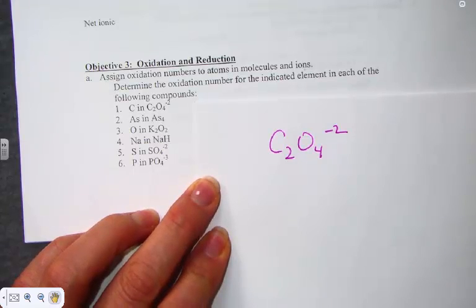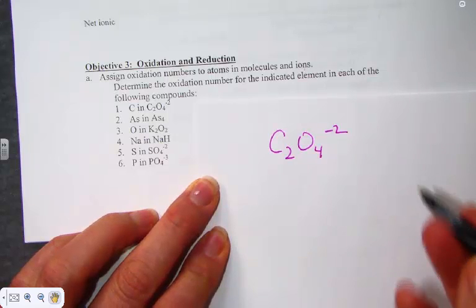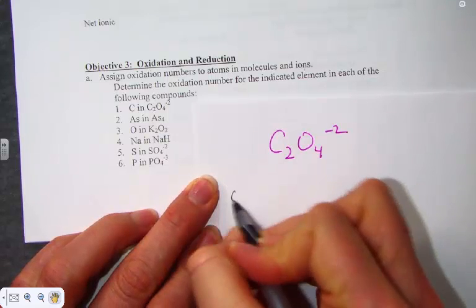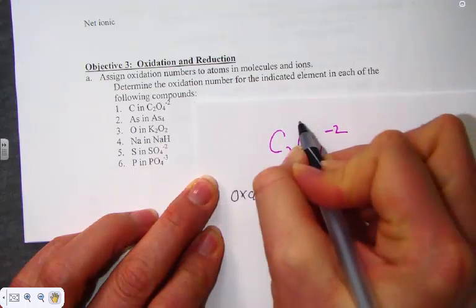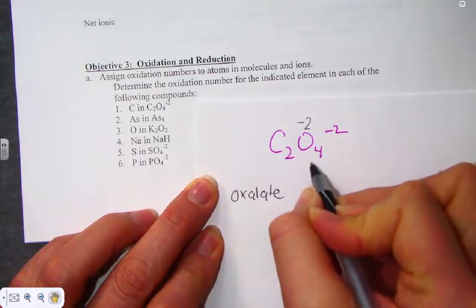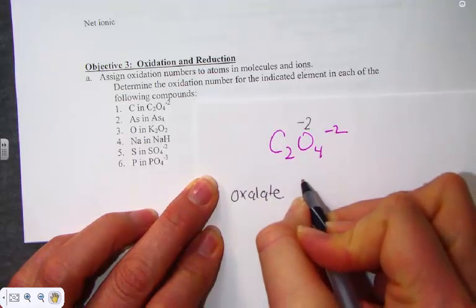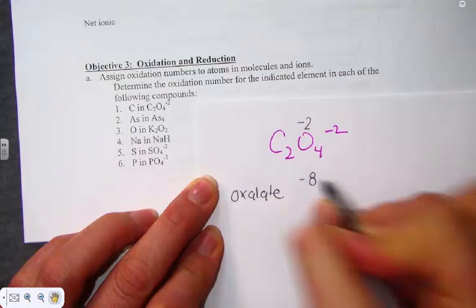It says that we know oxygen is always a minus 2, except if it's in a peroxide, which this is not. It's a polyatomic ion known as oxalate. You can find it on your polyatomic chart. If oxygen's assigned a negative 2, the net negative coming from the oxygen, its total contribution is a minus 8.